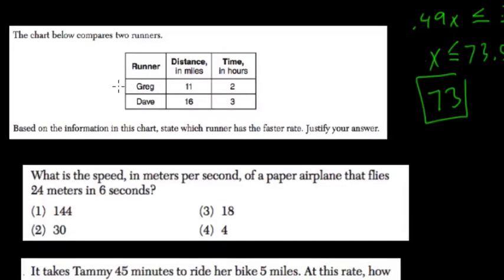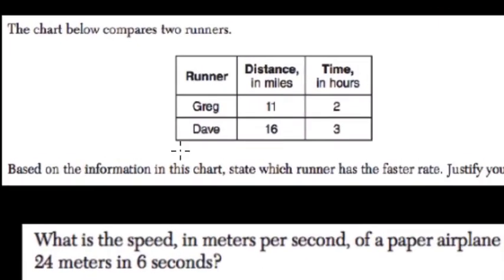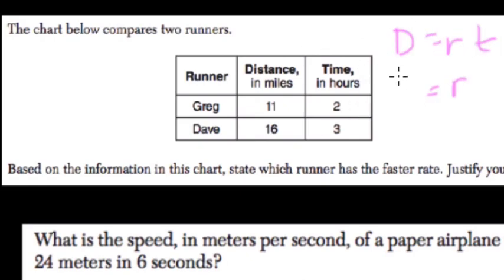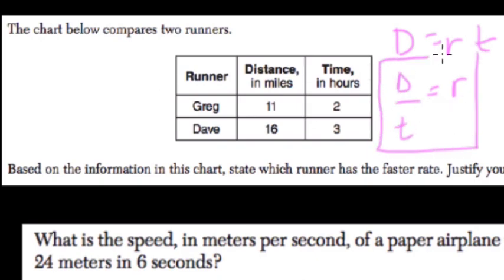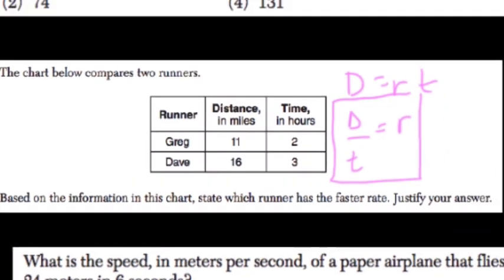The chart below compares two runners, Greg and Dave, to determine who has the faster rate. Since distance equals rate times time, rate equals distance divided by time. We'll use this formula to find the higher number.